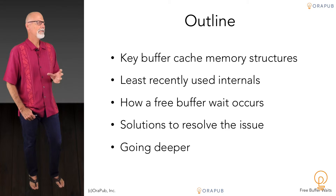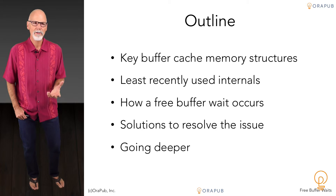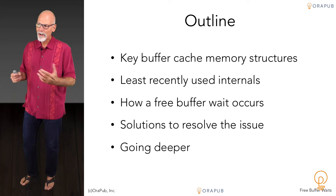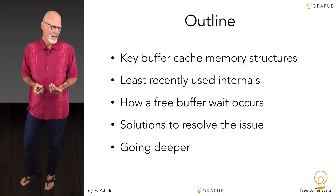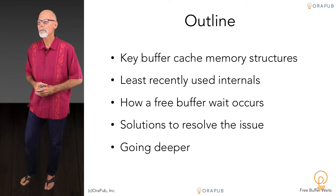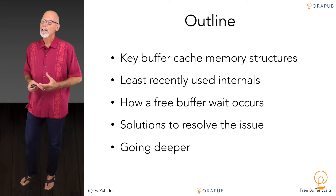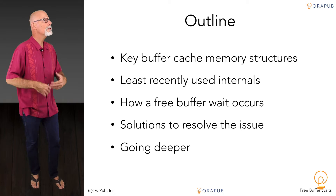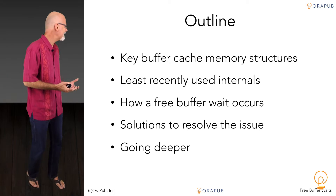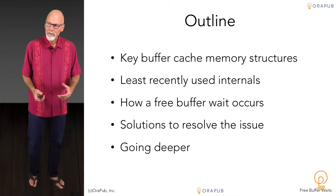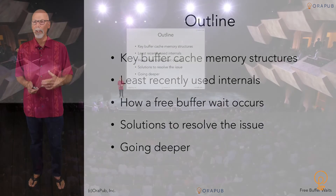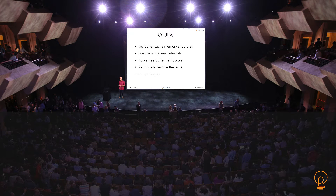And then we're going to get very specific about free buffer weights. What you'll notice is that once you understand the LRUs and the processes involved, it's very obvious why a free buffer weight actually occurs. And once we know why it occurs, the solutions will naturally just arise — it just makes sense. I'm going to show you and implement these solutions so we can see how big of a difference they actually make. And then I'm going to give you some pointers to additional resources where you can go even deeper.